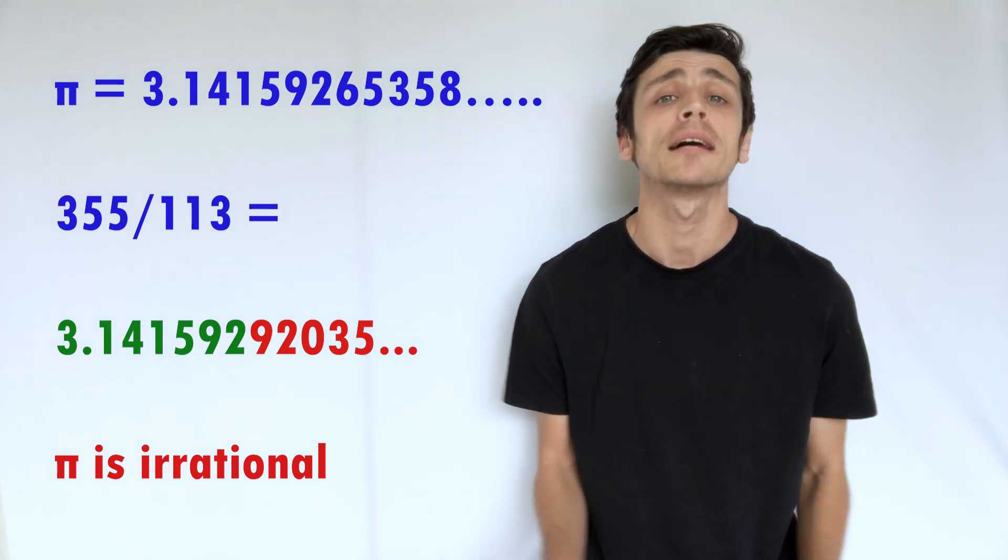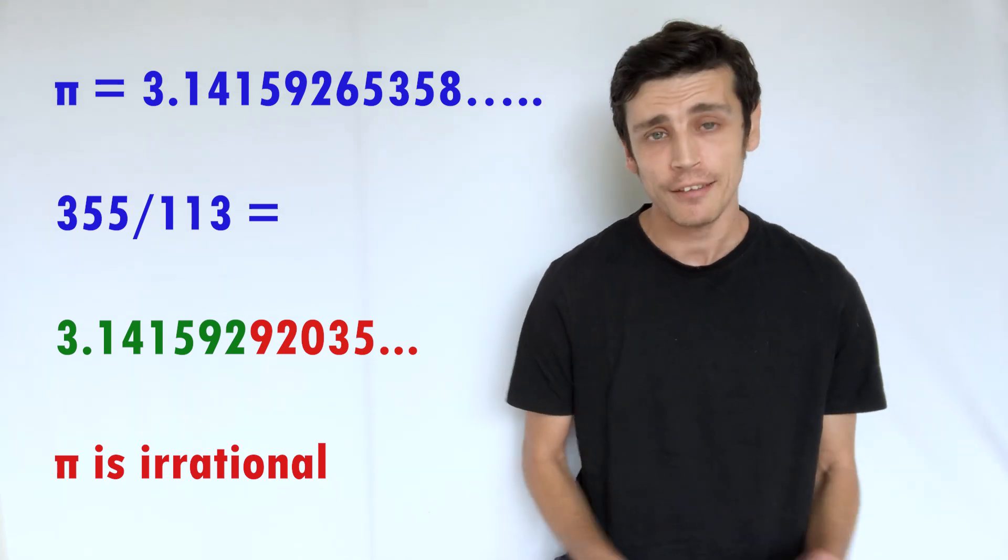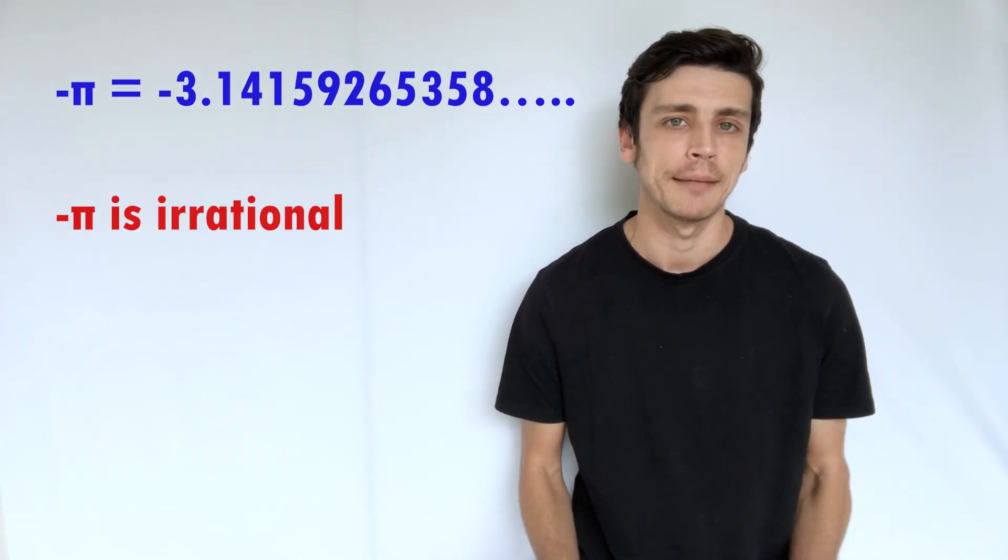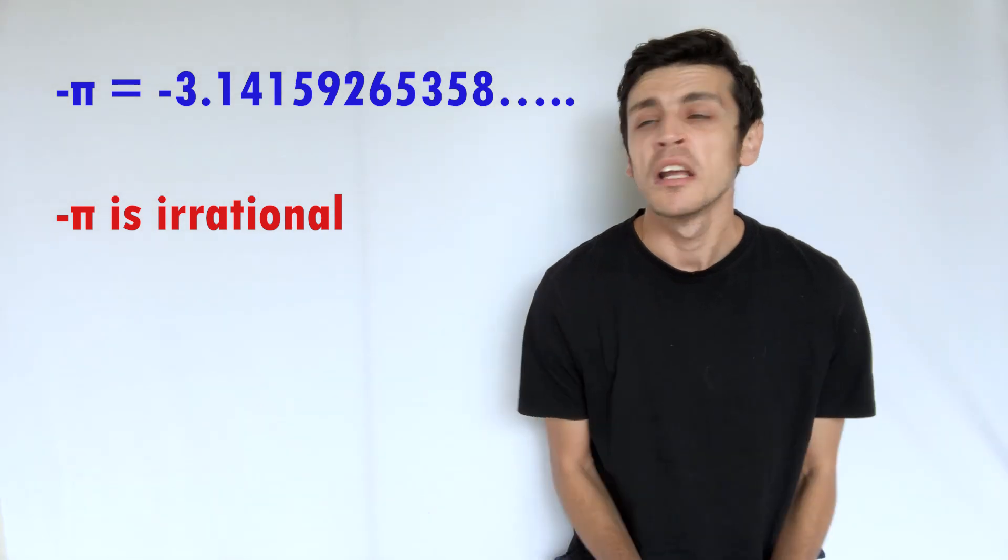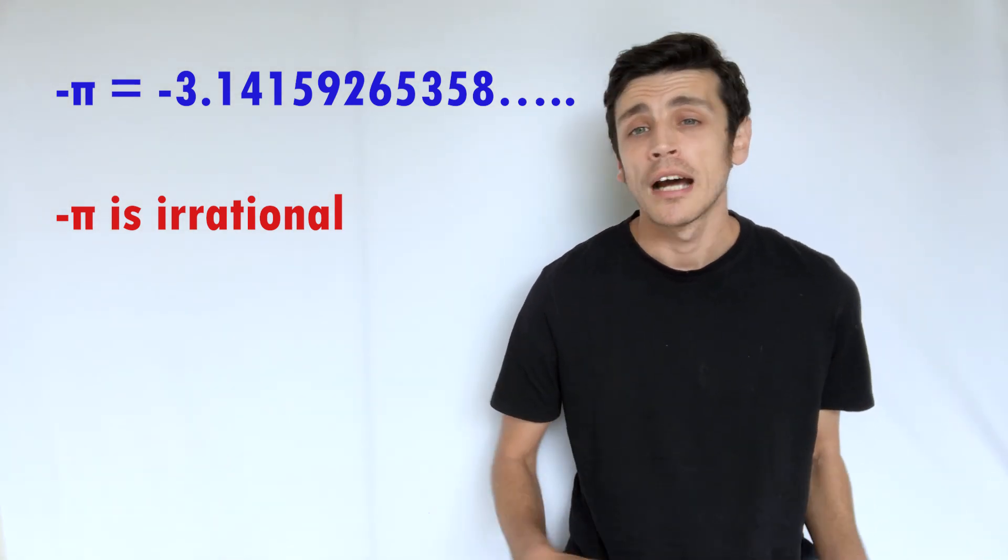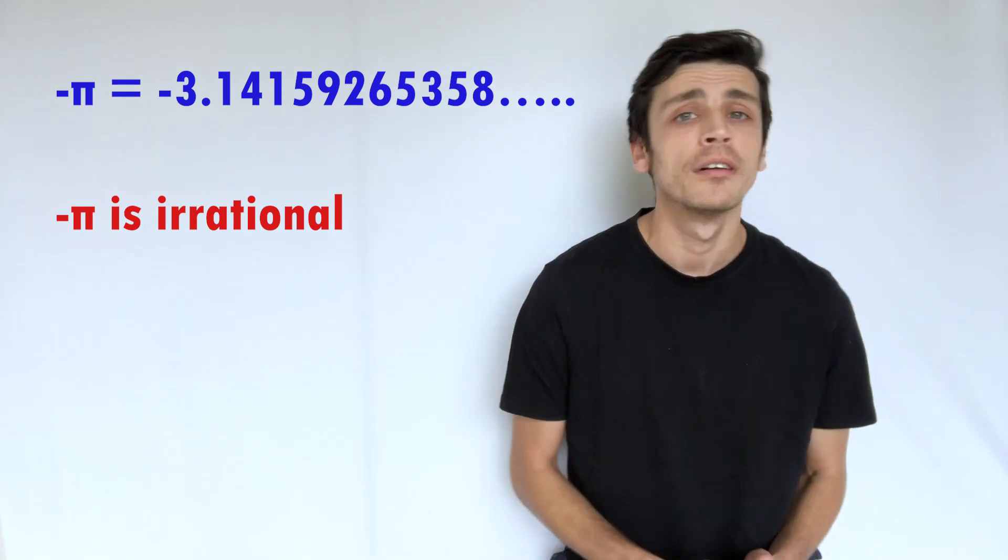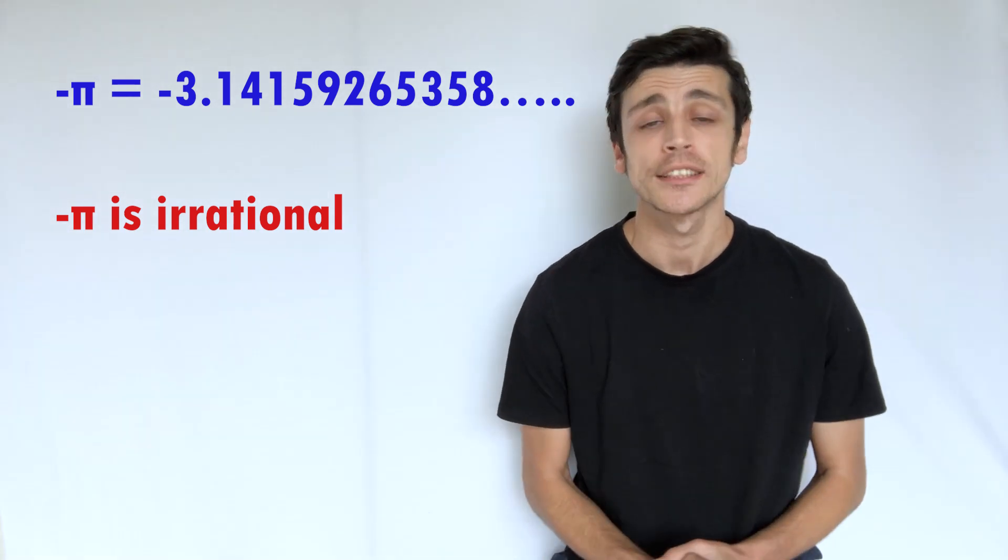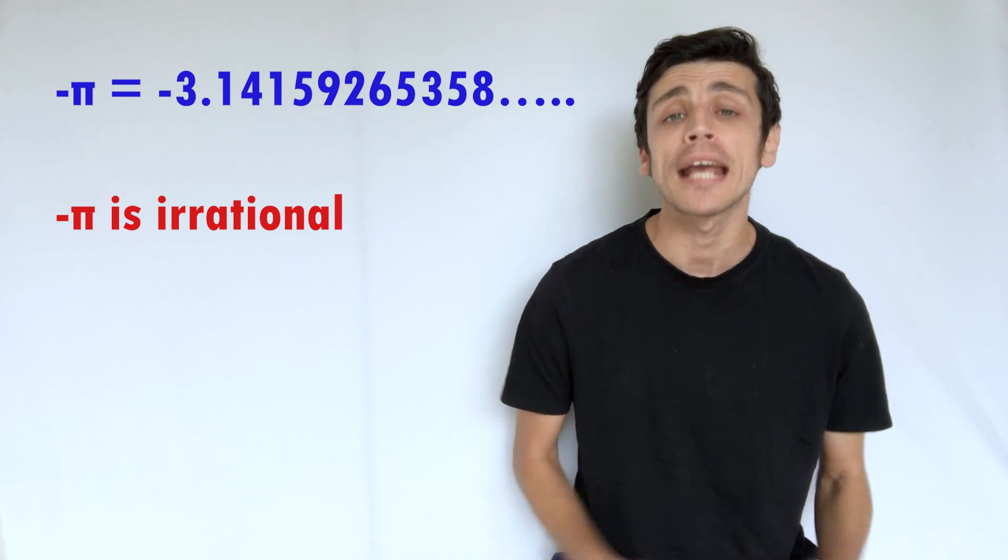And again, just like our rational numbers, irrational numbers can be negative as well. So you can have negative pi for example, which you can say for example is a representation of a rotation in the negative or the anti-clockwise direction. So we have negative values for these.